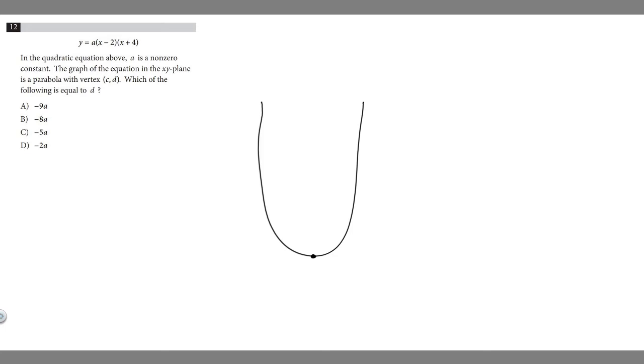what we need to realize is that in order to find the x-value of the vertex, we can find that by—if we're given two points of our parabola that have the same y-value,